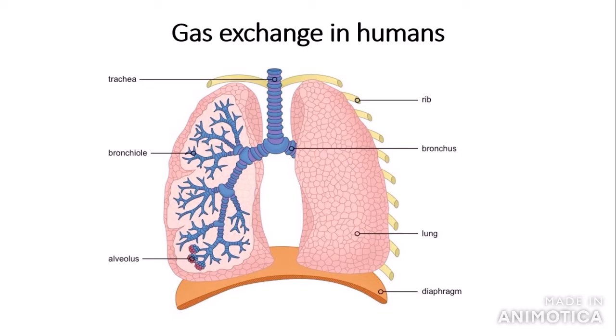Now we can move on to gas exchange in humans. This is a pair of human lungs. We have the trachea — the windpipe, though at A-level you need to say trachea. We have the bronchi, which are the two main stems from the trachea that go into both lungs, and then the divisions of the bronchi are called bronchioles. We also have the diaphragm, which is the main breathing muscle, and the alveoli — the part of the lungs where oxygen diffuses into the blood.